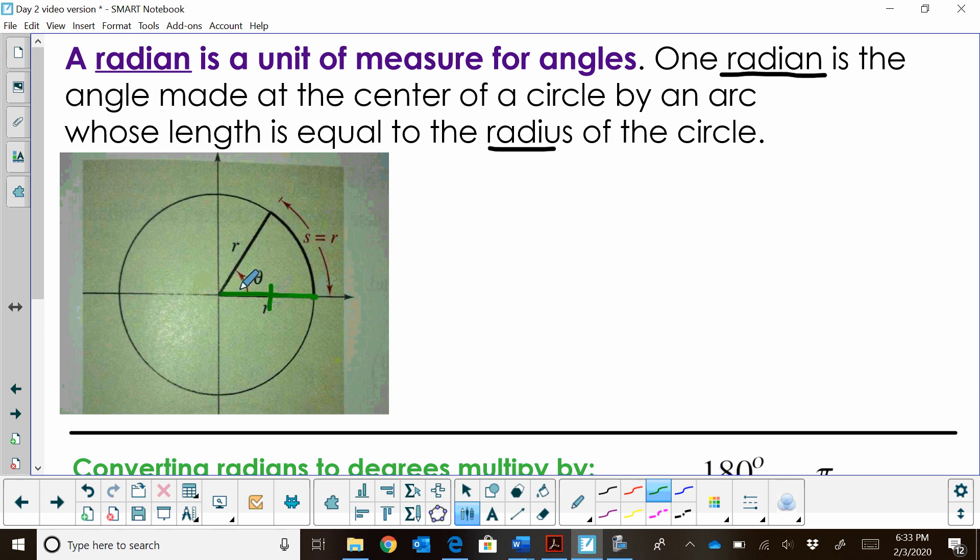I'm going to take my highlighter here and draw the length of the radius. If I took that and stretched it out on the curve of the circle, that would be the same length as the radius. That is the angle that's now created with the other radius at the center—that's one radian as an angle measure.